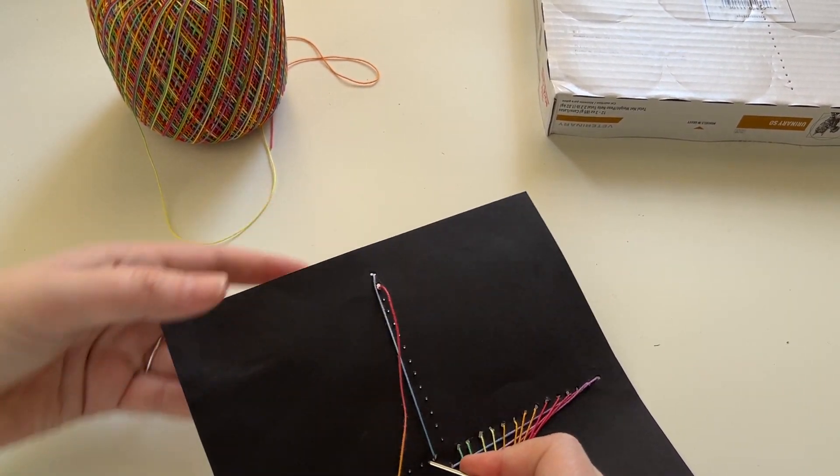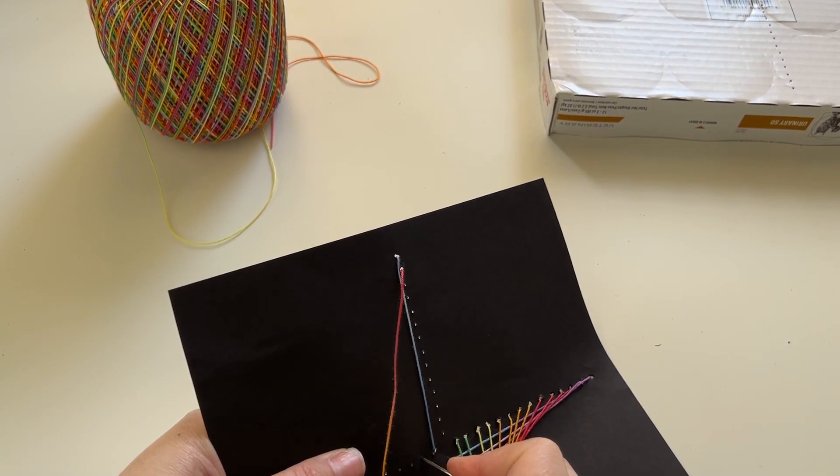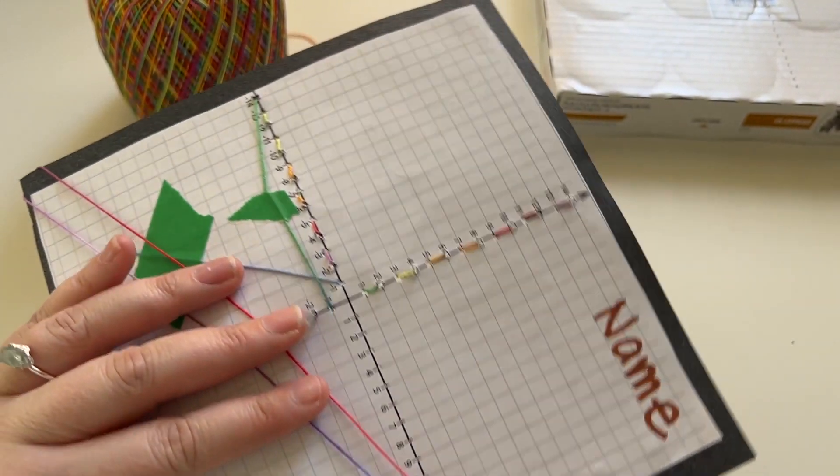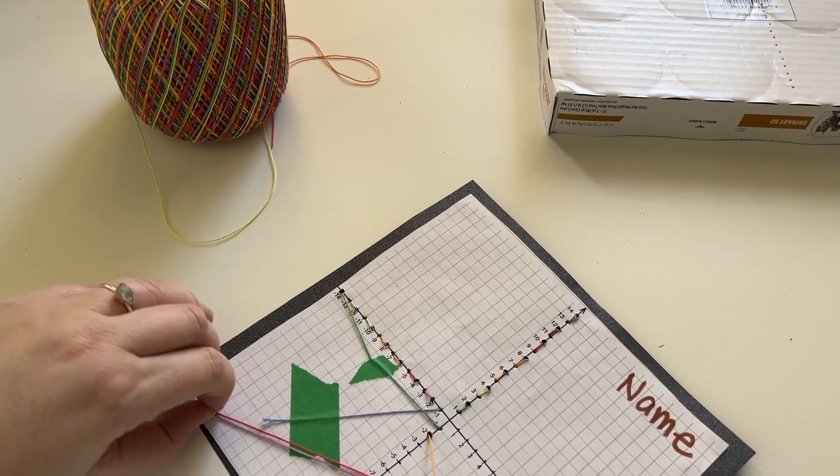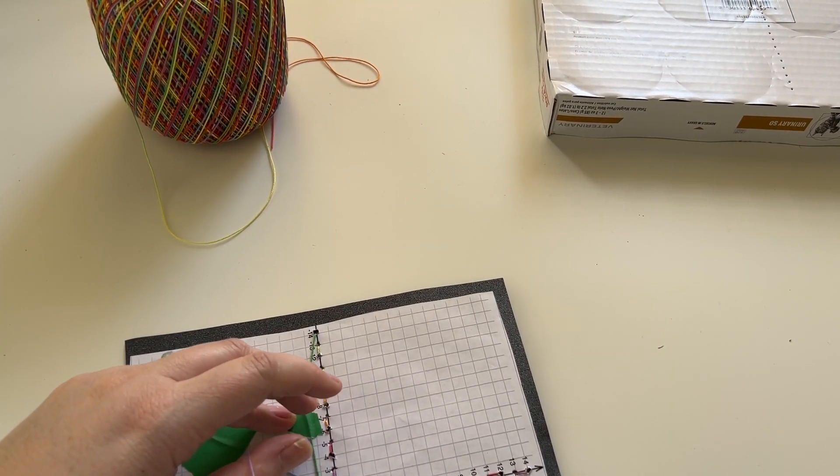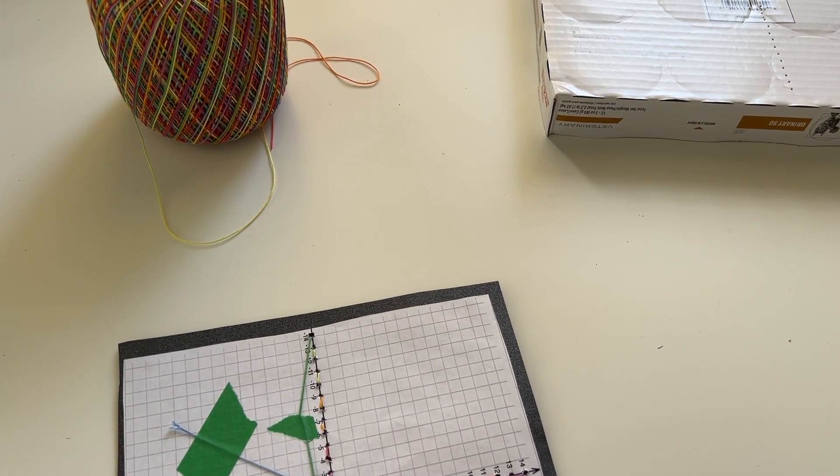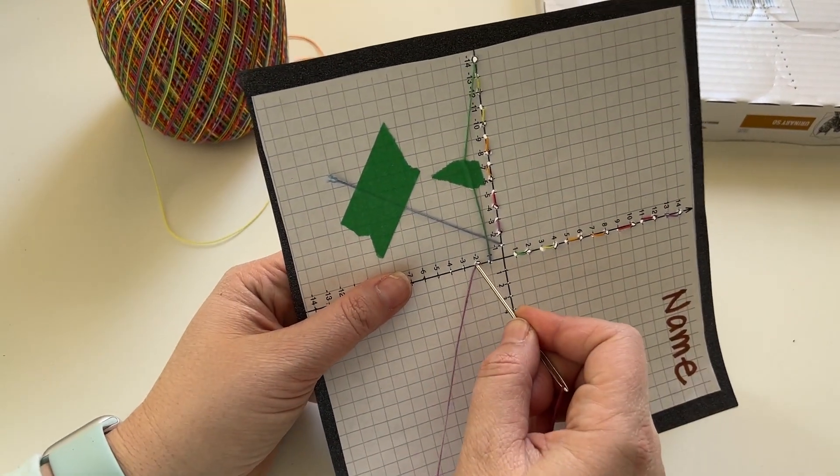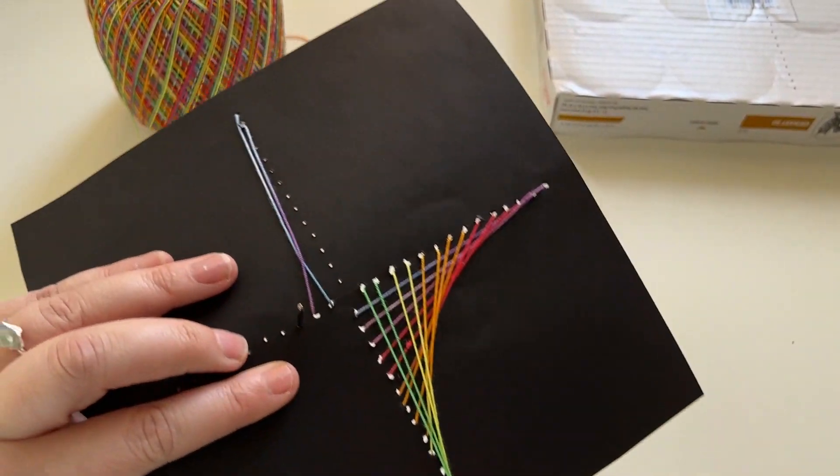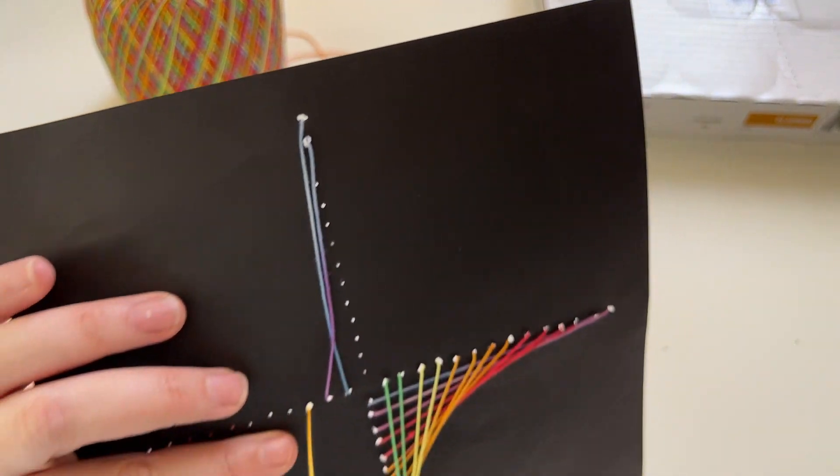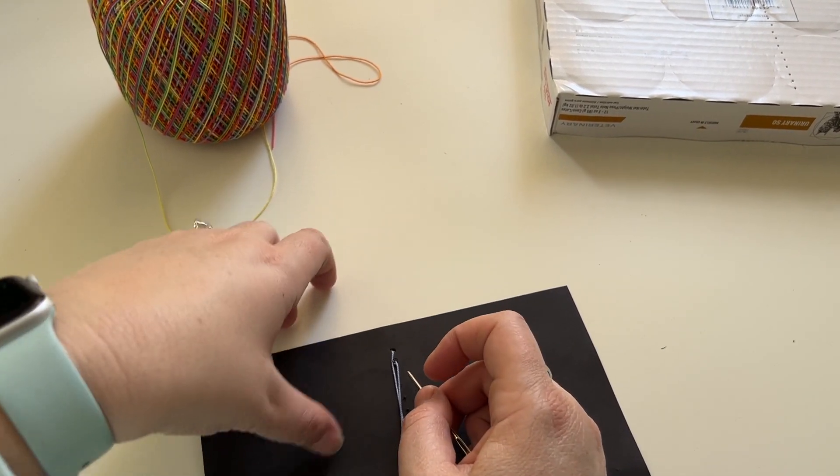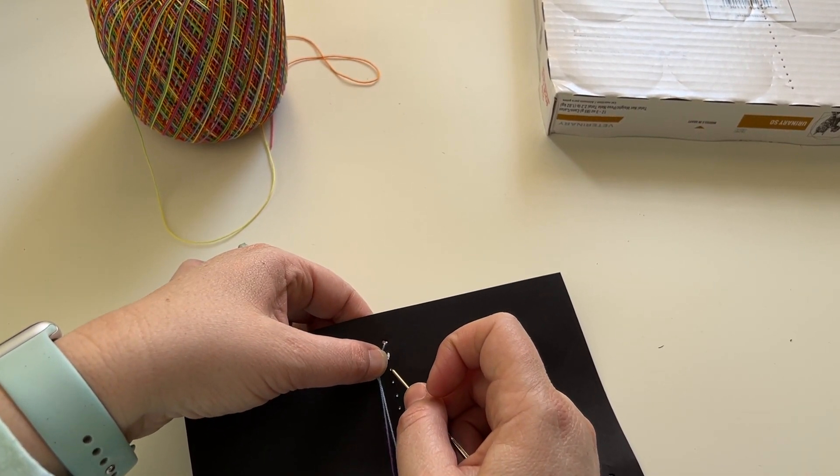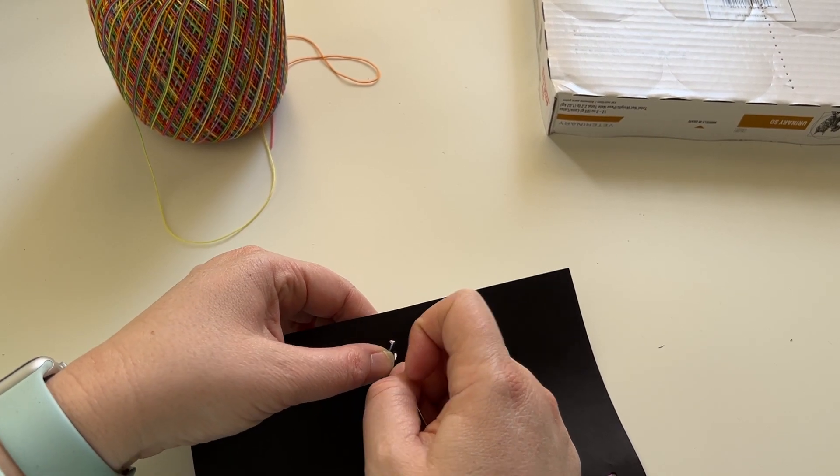Now if you run out of thread, same process: you snip it off in the back and tape it down, and then you just keep going. From two to negative three, and then make sure you're pulling tight, going in through the next one, and just keep it going.